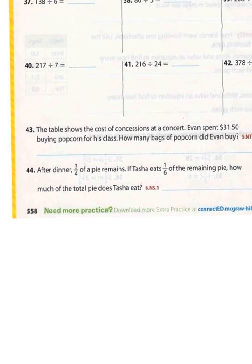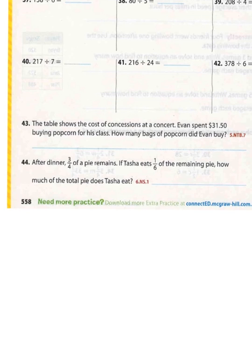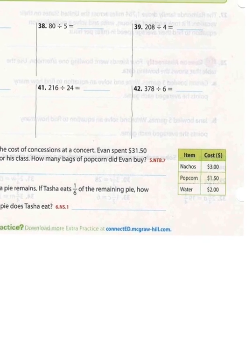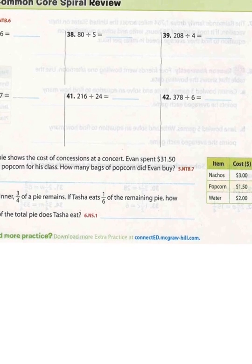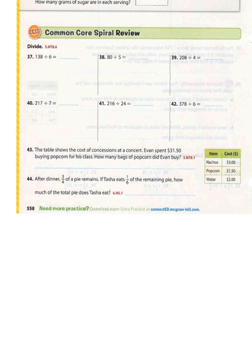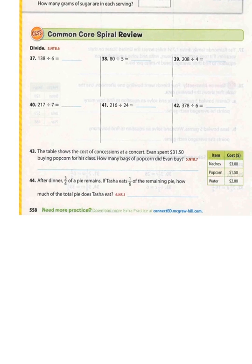Number 43 says the table shows the cost of concessions at a concert. Evan spent $31.50 buying popcorn for his class. How many bags of popcorn did Evan buy? The concessions are shown over here. So Evan spent $31.50 buying popcorn, and we know popcorn costs $1.50. What am I going to do to $31.50 to figure out how many popcorn bags he bought? I'll let you guys think about that.